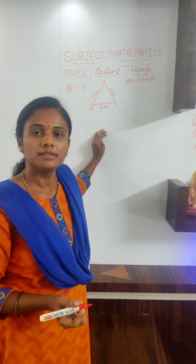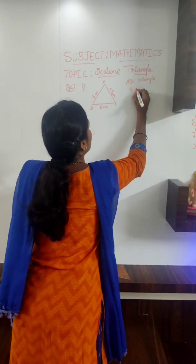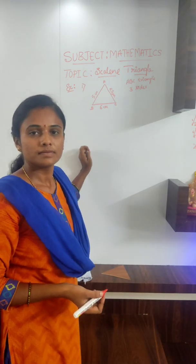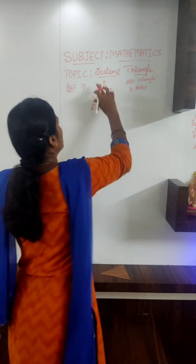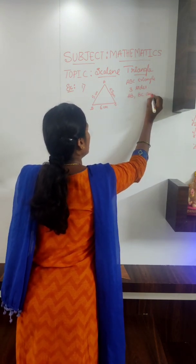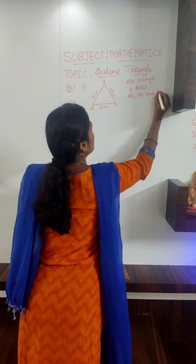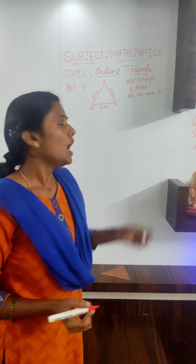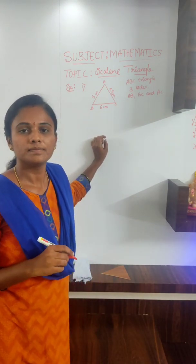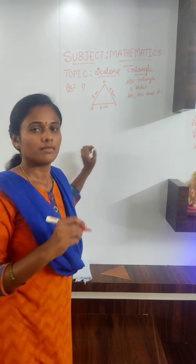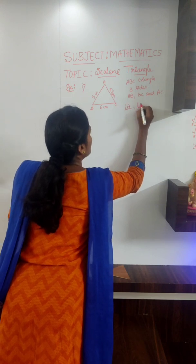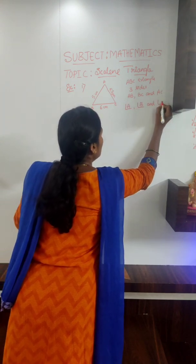How many sides are there? Three sides. What are they? AB, BC and AC. Very good. AB, BC and AC. How many angles are there? Three angles. What are they? Angle A, angle B and angle C. Very good. Angle A, angle B and angle C.